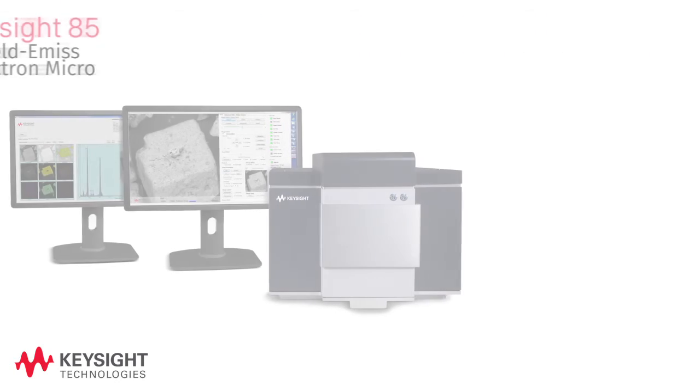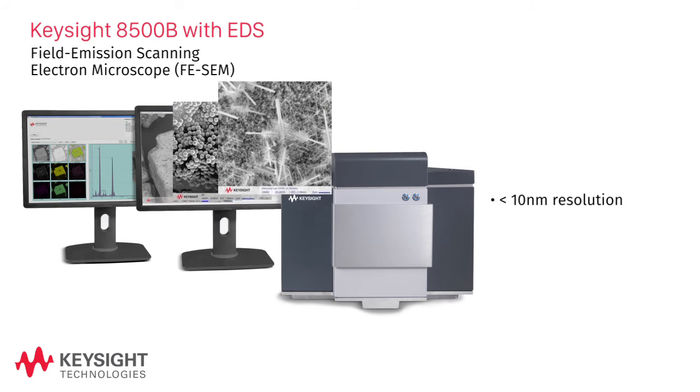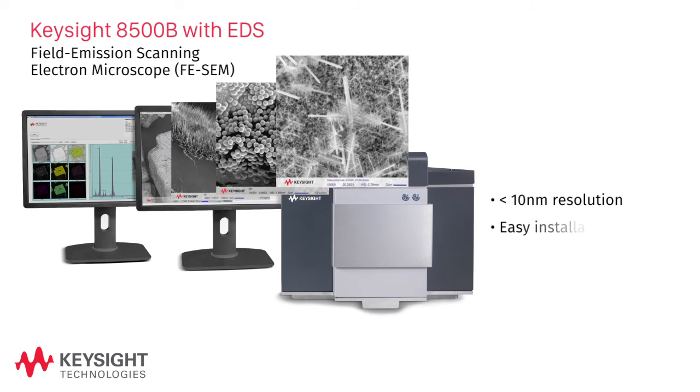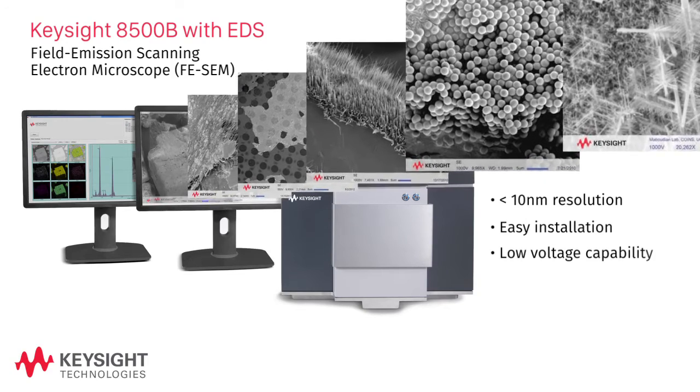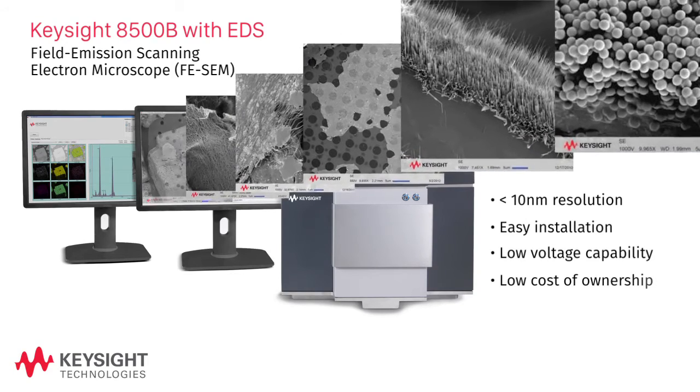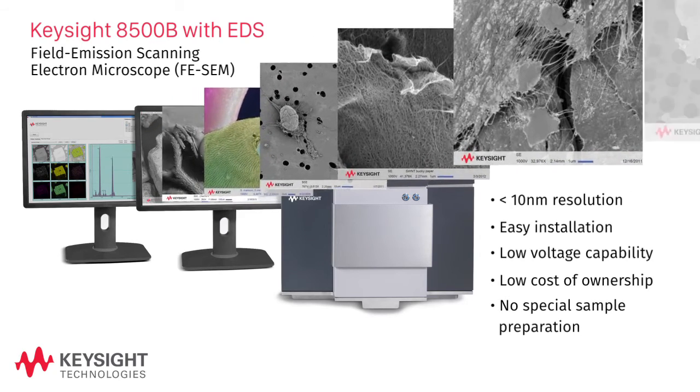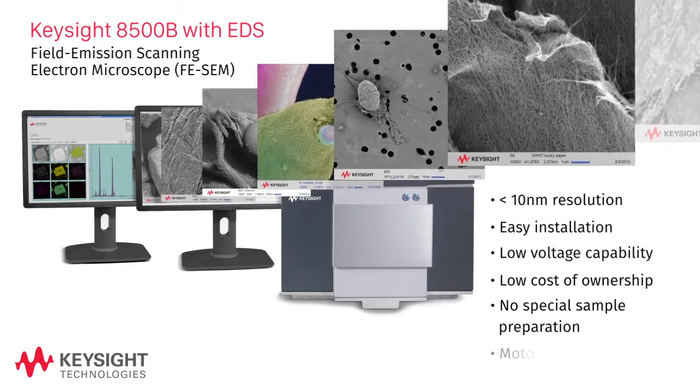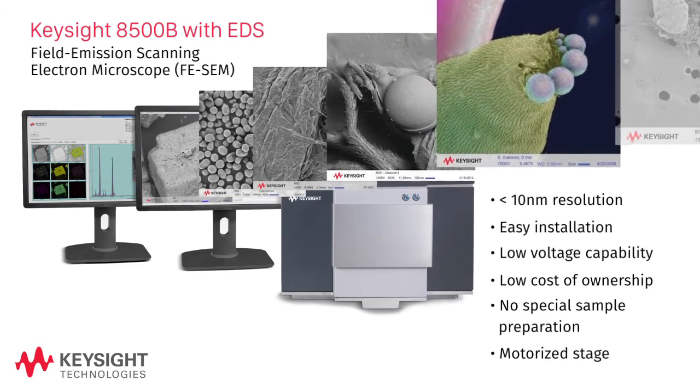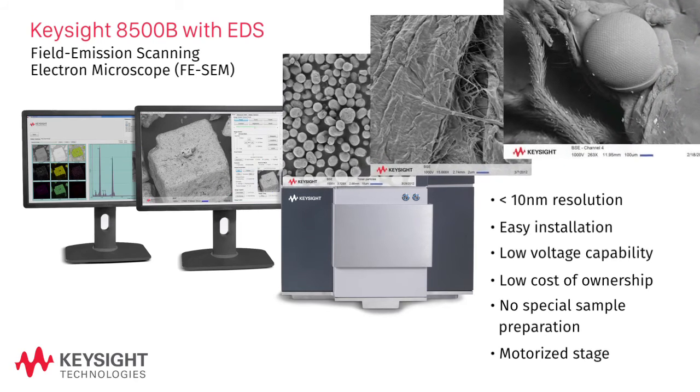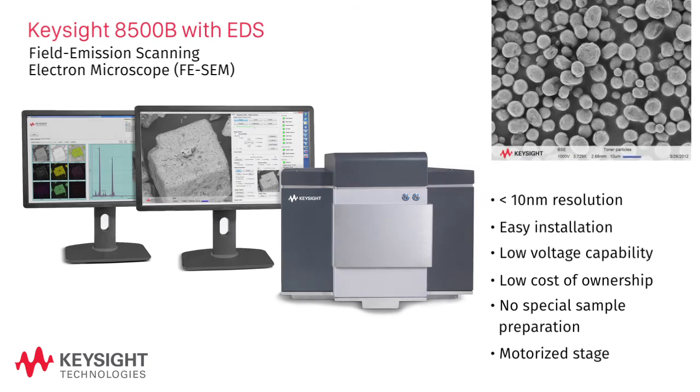The Keysight 8500B Compact FE-SEM offers less than 10 nanometer resolution, fast and simple installation thanks to a clever plug-and-play design, continuously variable low voltage for imaging energy sensitive samples, consistent repeatable performance with no special sample preparation requirements, with a motorized stage that lets you quickly transition from loading samples to getting data and now fully integrated energy dispersive spectroscopy capabilities for quantitative elemental analysis.